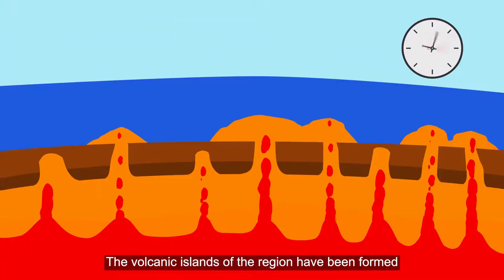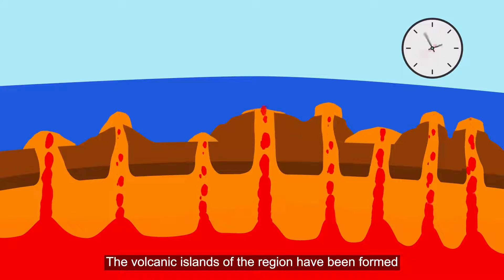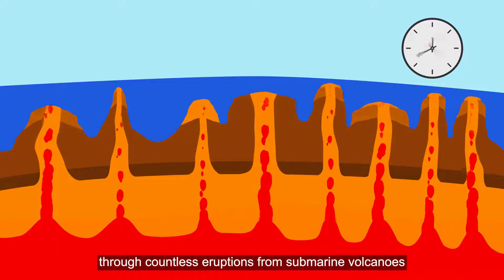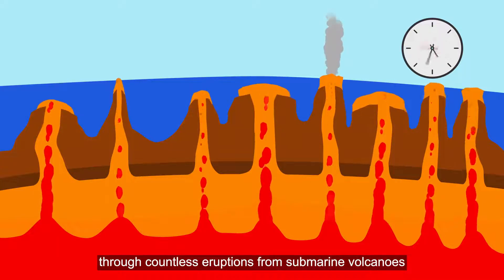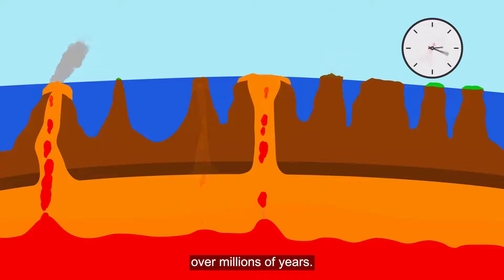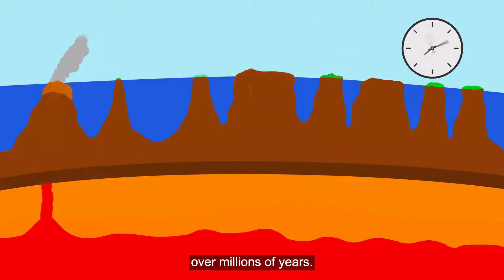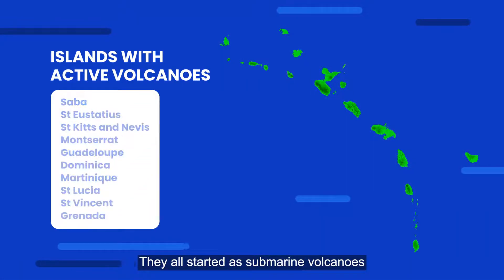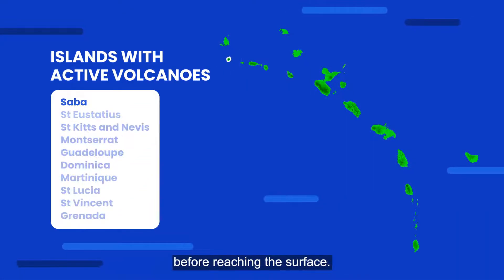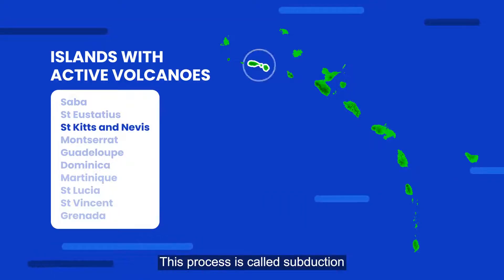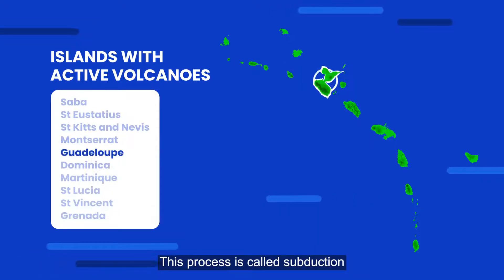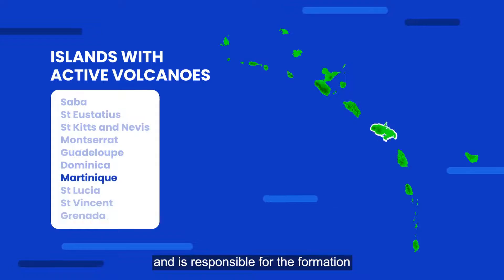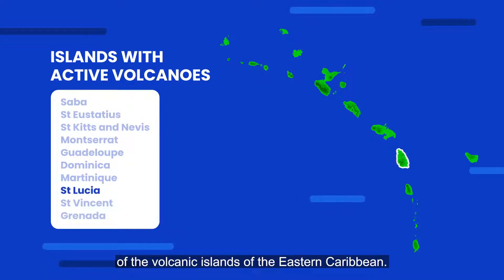The volcanic islands of the region have been formed through countless eruptions from submarine volcanoes over millions of years. They all started as submarine volcanoes before reaching the surface. This process is called subduction and is responsible for the formation of the volcanic islands of the eastern Caribbean.